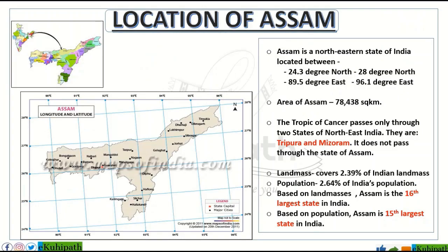Assam is a North-Eastern state of India. We are going to talk about the exact location of Assam.